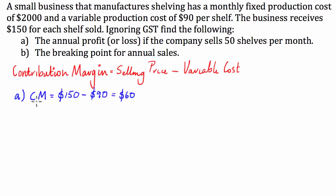So what we can do is we can say the contribution margin of 50 shelves is going to be equal to $60 times 50 shelves or $3,000.